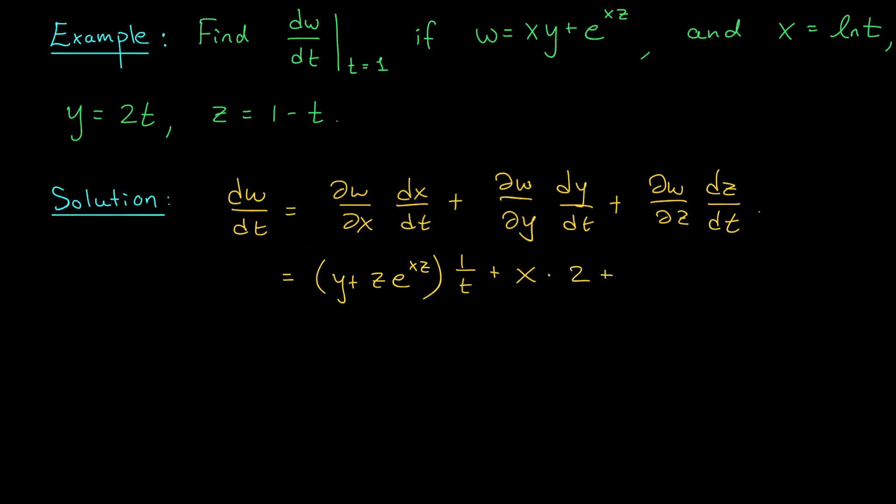The derivative of w with respect to z, okay, the first term doesn't come into play, but again, I have a chain rule. I should get x e to the xz and the derivative of z with respect to t is just minus 1. So if I clean all this up, what I should get is y plus z e to the xz times 1 over t plus 2x minus x e to the xz.